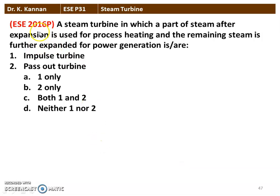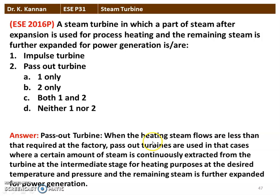Next question from the 2016 question paper — a steam turbine in which part of the steam after expansion is used for process heating and the remaining steam is further expanded for power generation is called a pass-out turbine. When the heating steam flow is less than required at the factory, pass-out turbines are used, where a certain amount of steam is continuously extracted from the turbine at intermediate stages for heating at the desired temperature and pressure, and the remaining steam is further expanded for power generation. Option B, statement 2 is the correct answer.